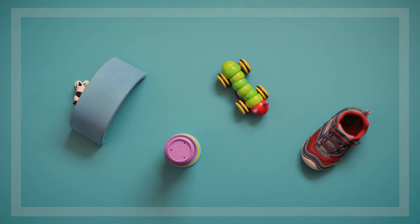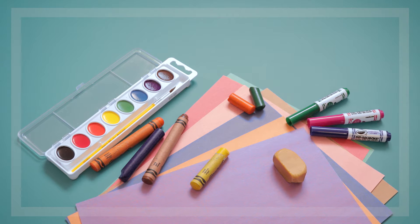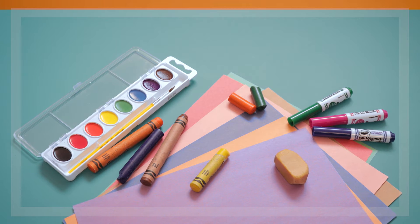For this part of the game, you'll need the same obstacle course that you used in Parts 1 and 2, as well as the spatial word cards and some art supplies like paper, crayons, pencils, or markers.